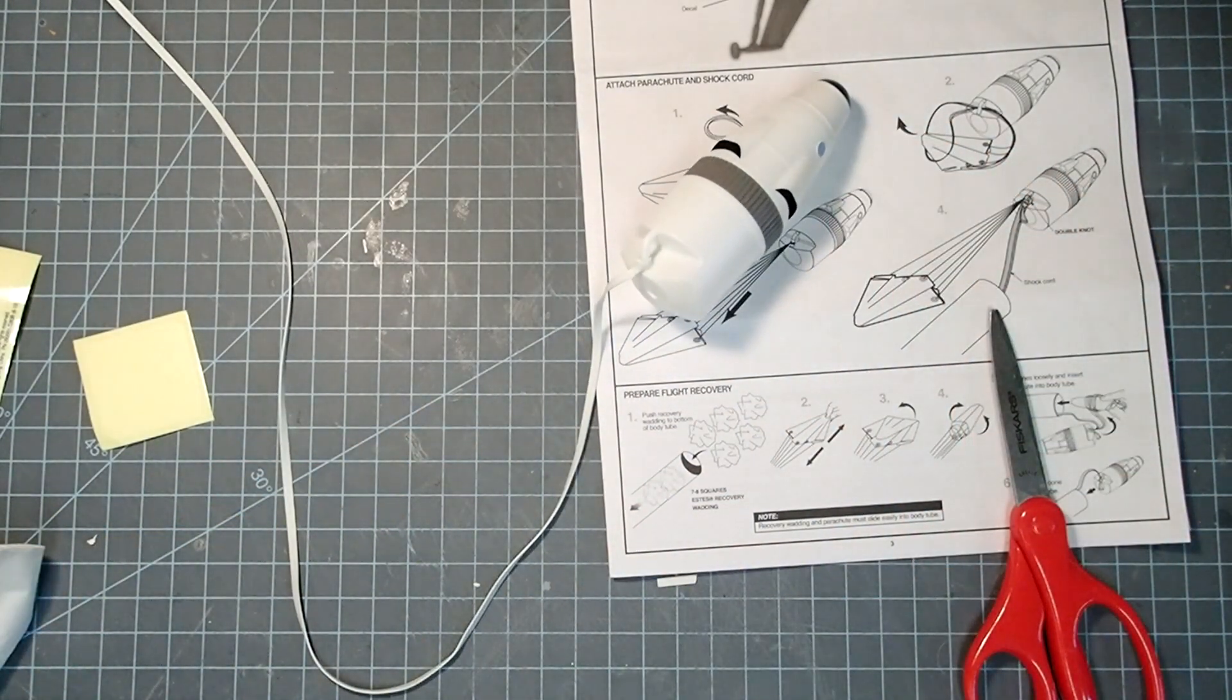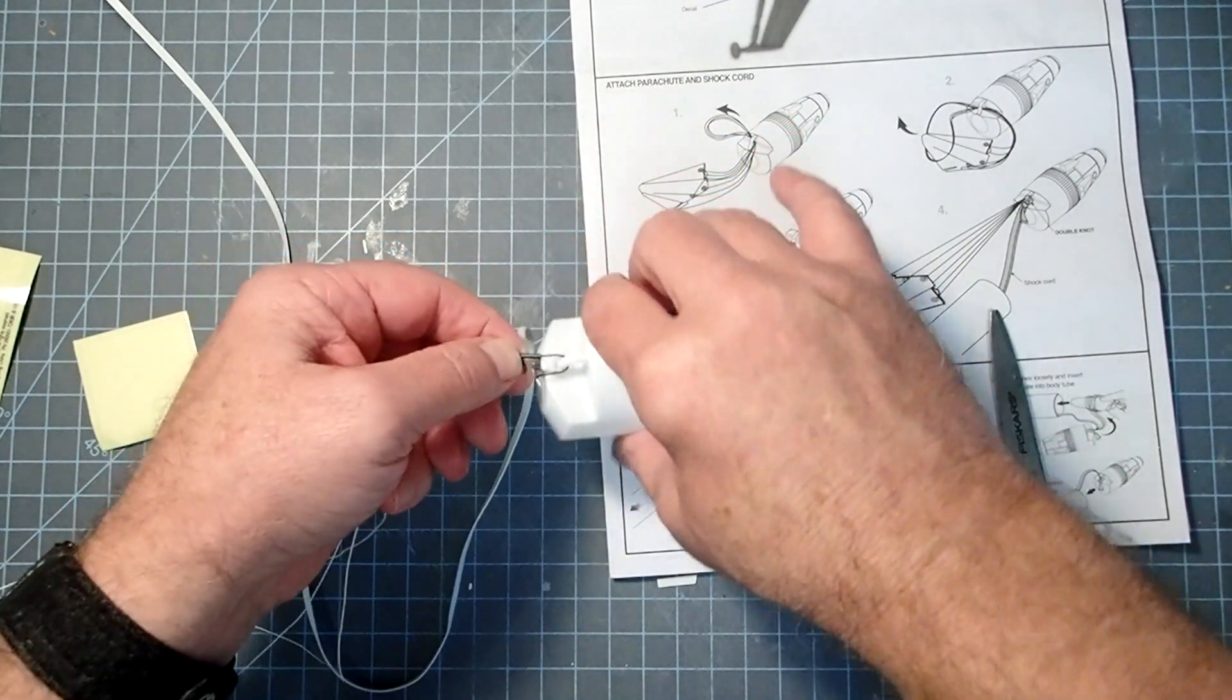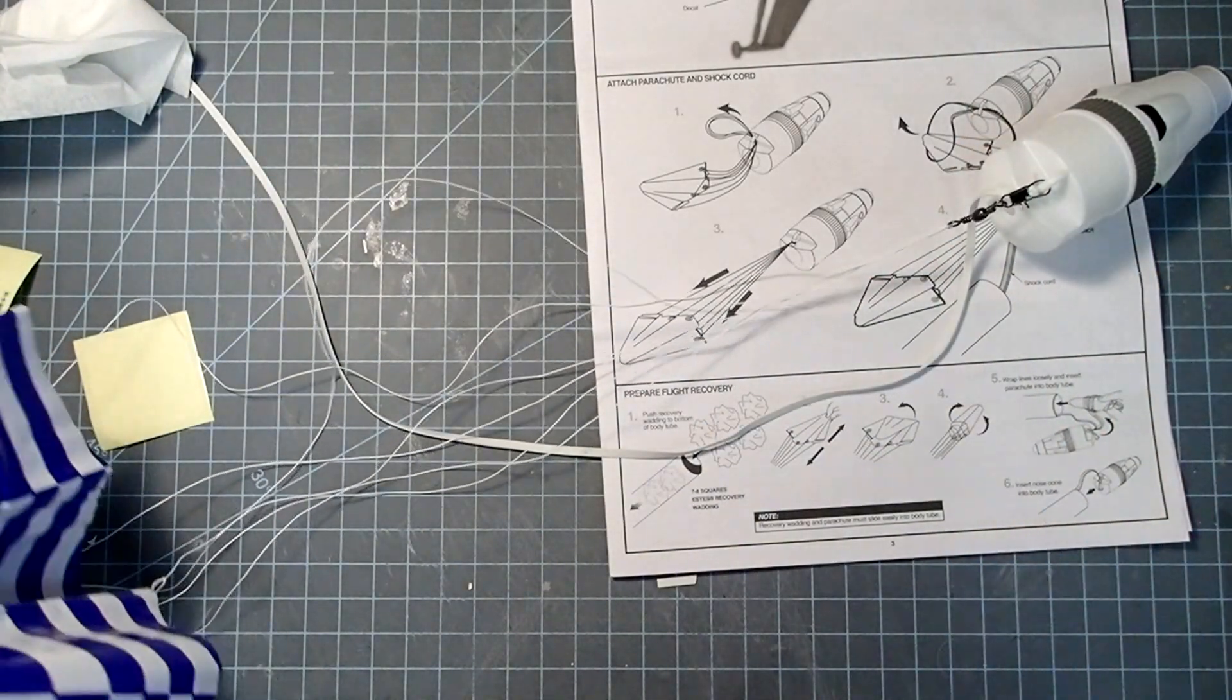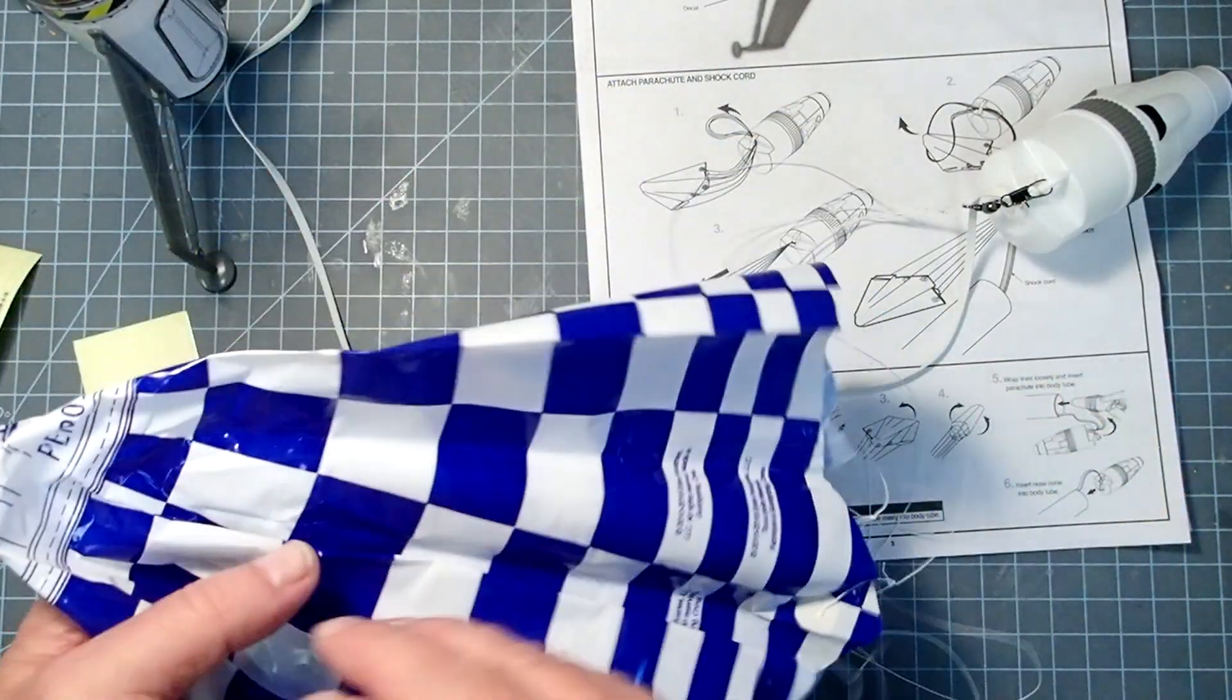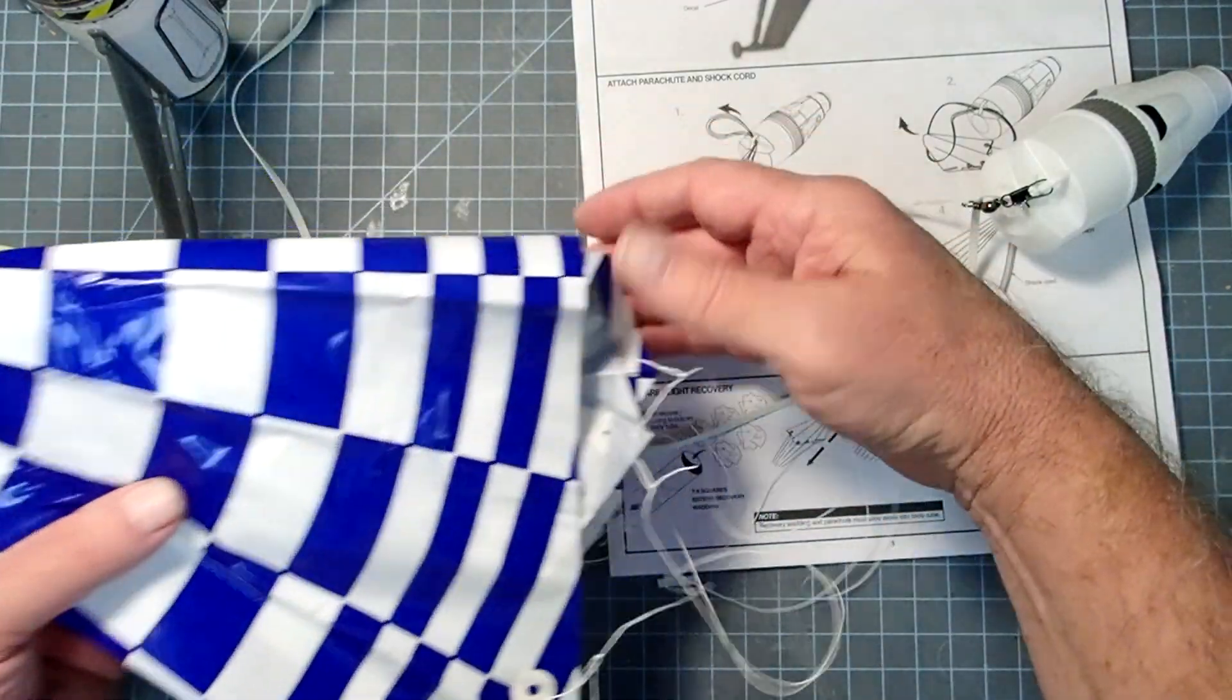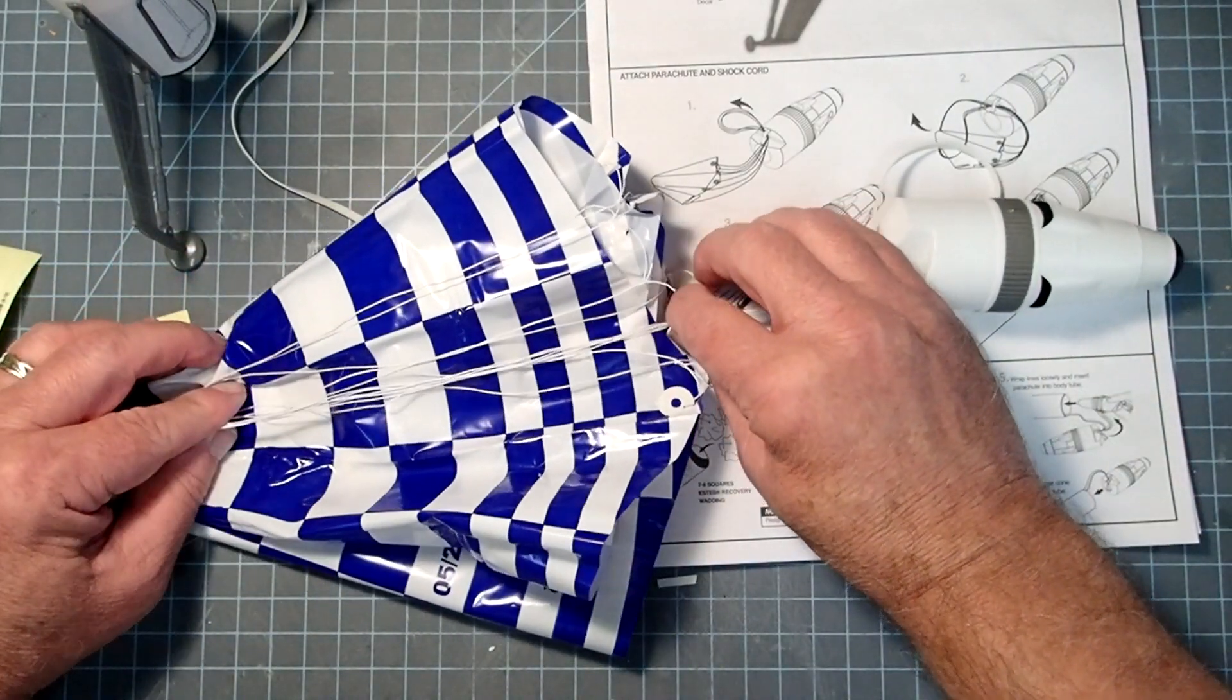And then finally we put our parachute on, if you haven't done so already. Now, if you're preparing this for launch, you'll want to put about five pieces of ejection wadding in there to protect the parachute. I'm not going to do that right now, but I will fold this as if I were. So I'm going to take my parachute and fold it roughly into a triangle there, and then take my shroud lines about halfway down, and I'm going to pull them in as a loop like that, and then I'm going to fold the sides of the parachute over the shroud lines.